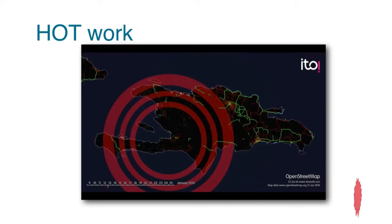The OpenStreetMap community very quickly produced, through remote armchair mapping, within about a day the most data-rich, accurate map that had ever been made of Haiti. What that allowed the emergency rescuers on the ground to do was look at their mobile phones, get the global data set updated, and say things like: 'Over there there was a school, let's start digging' or 'There's a hospital, let's get to work.'